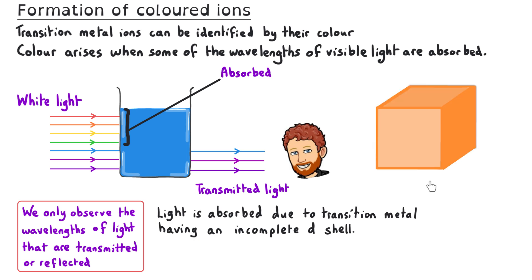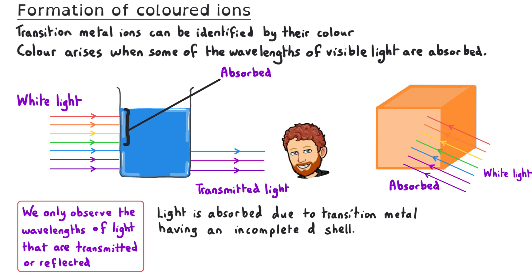This works with reflection from solid samples too. When white light is incident on a solid object, if violet and blue light are absorbed, the remaining light will be reflected and the observer will see the object as being orange. Solutions will transmit the light that is not absorbed, and solid samples will reflect the light that is not absorbed.